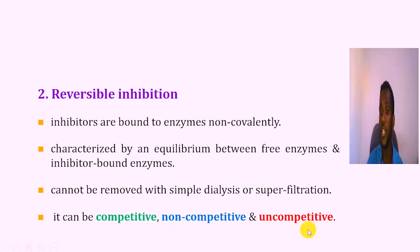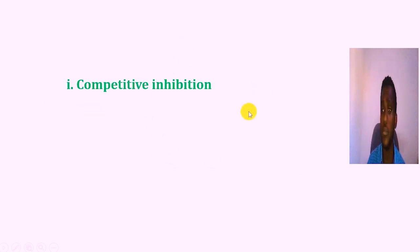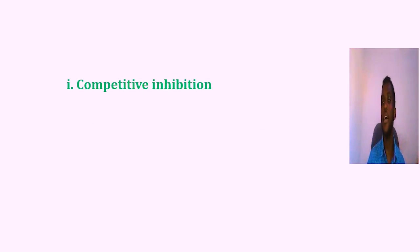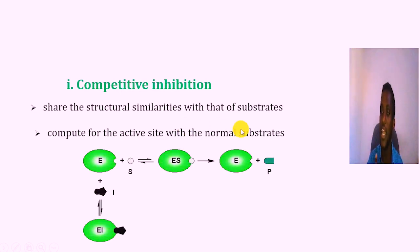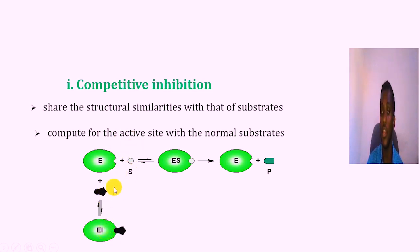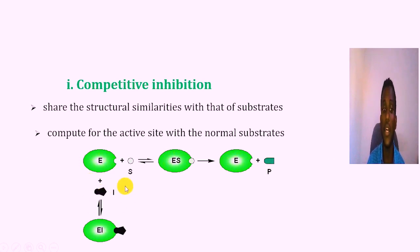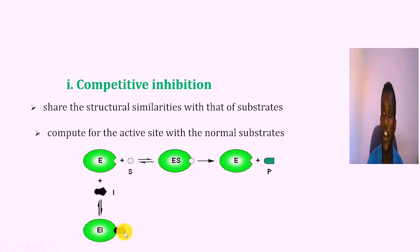One type is competitive inhibition. What is competitive? In competitive inhibition, the inhibitor competes with the substrate for the active site of the enzyme. If the substrate concentration is more than the inhibitor, the enzyme will bind more substrate than inhibitor, forming enzyme-substrate complex and then enzyme-plus-product. The inhibitor binds to the active site, forming an enzyme-inhibitor complex. If dialysis or filtration is applied, the inhibitor can be removed.